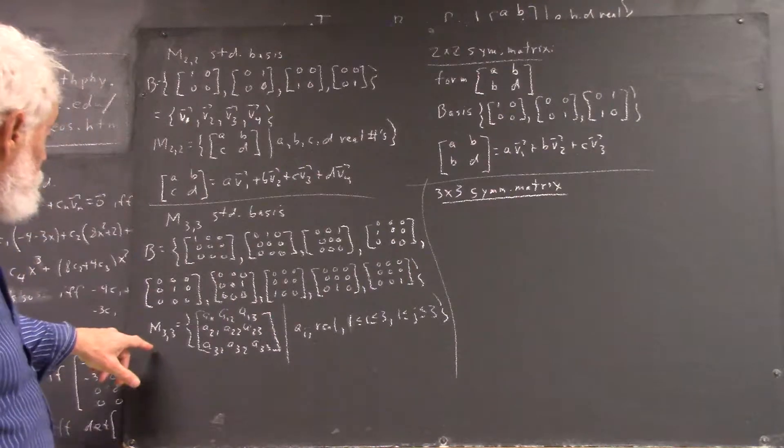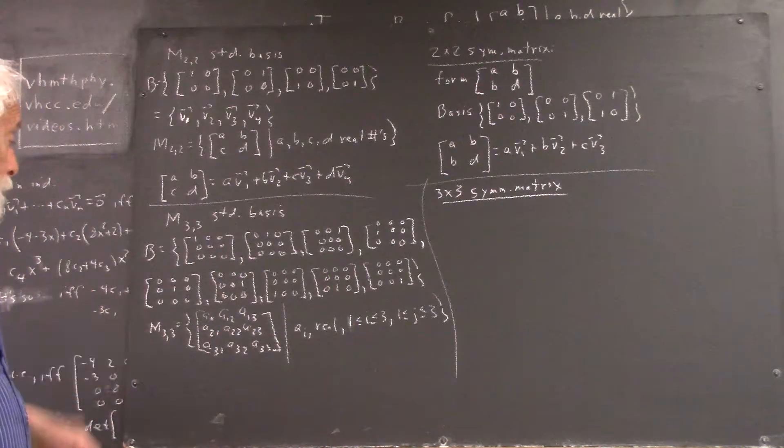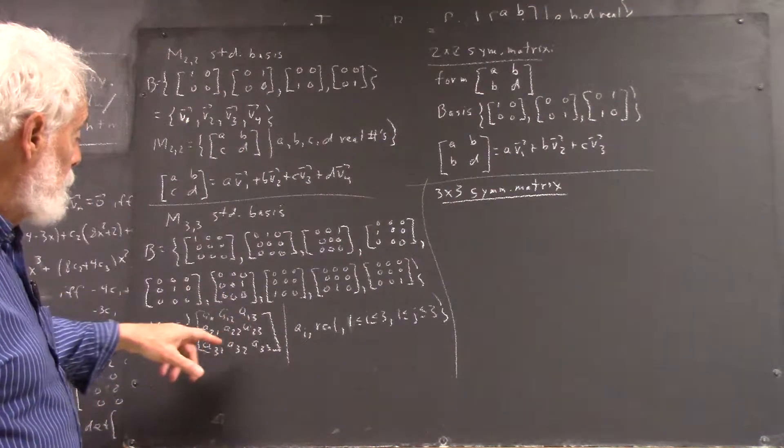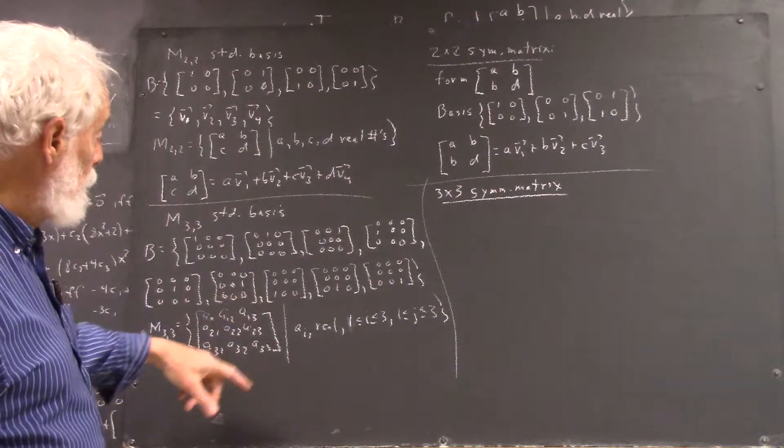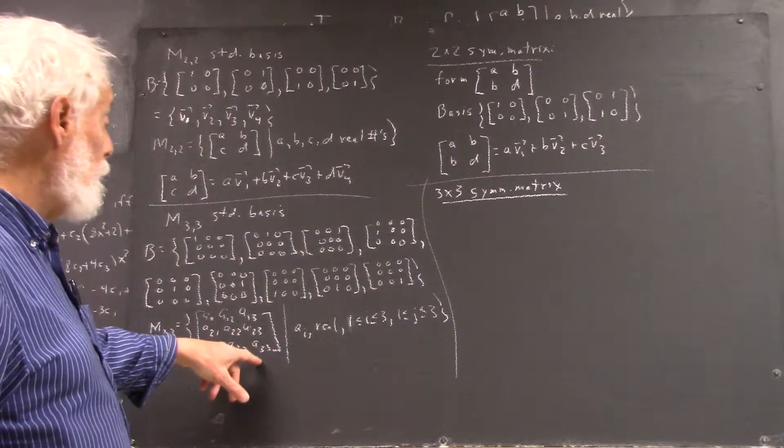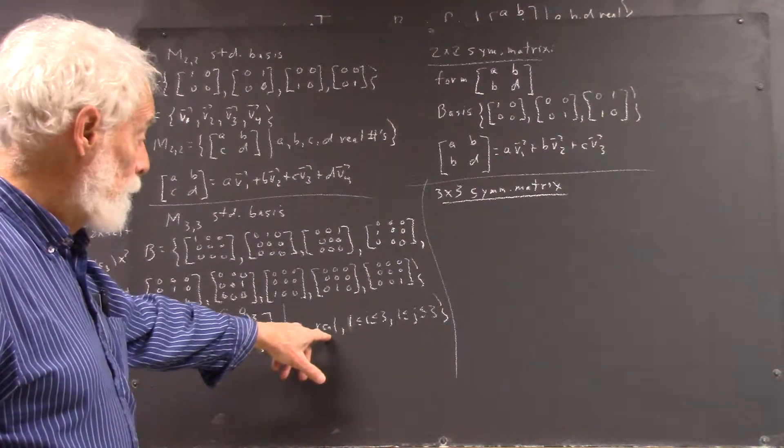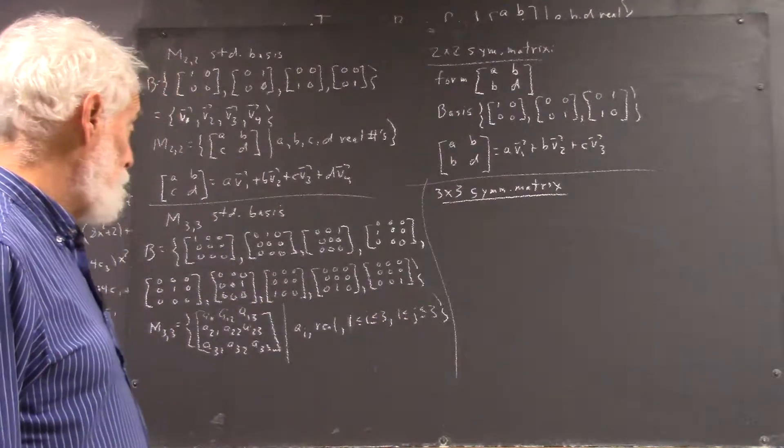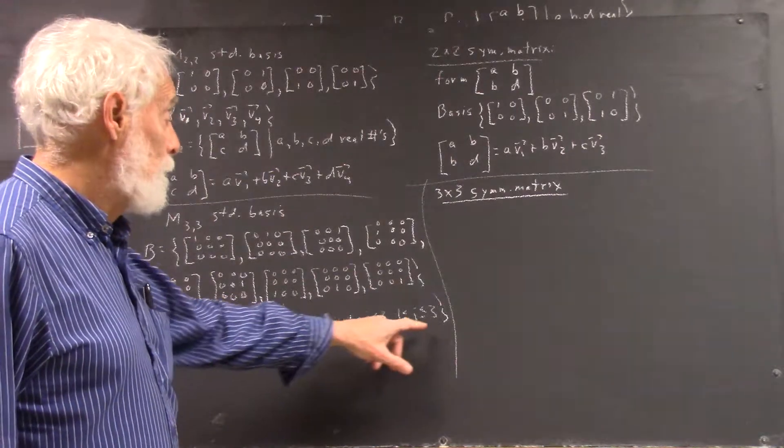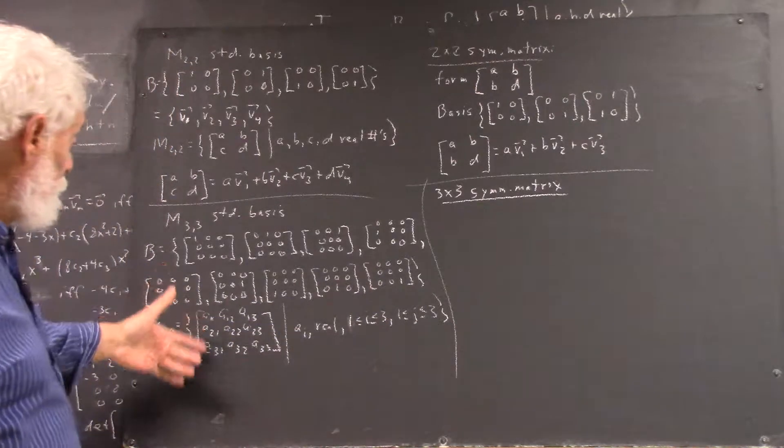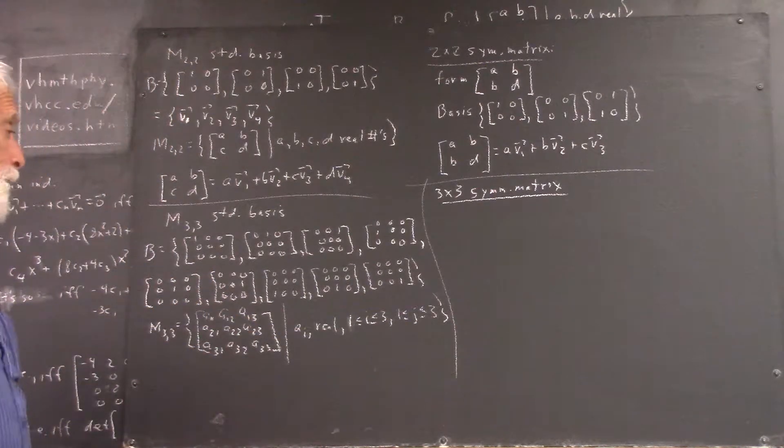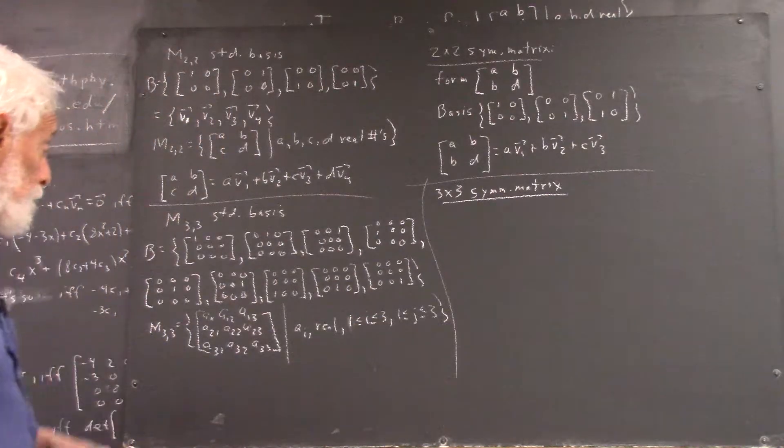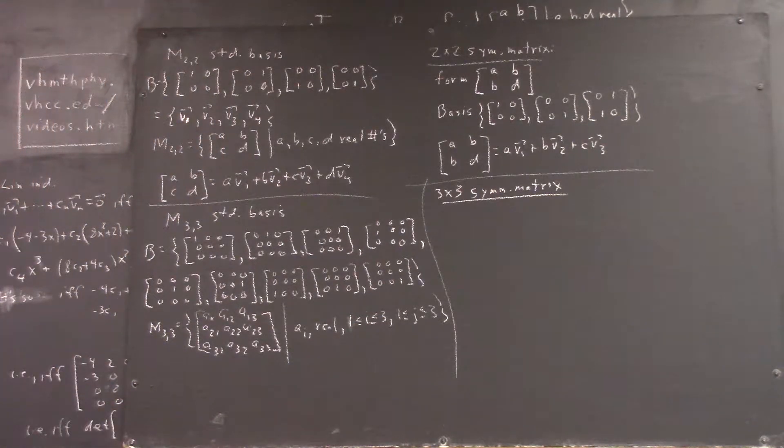And we could write M33 in set notation as a set of matrices, A11, A12, A13, A21, A22, A23, A31, A32, A33, where the A_i_j are real. So, i running from 1 to 3, j running from 1 to 3. Now, i from 1 to 3, j from 1 to 3 covers every possible subscript we have here. So, the A_i_j for all those possible subscripts are all real.